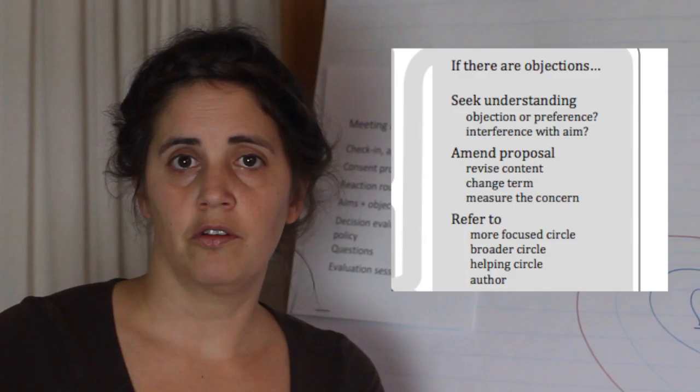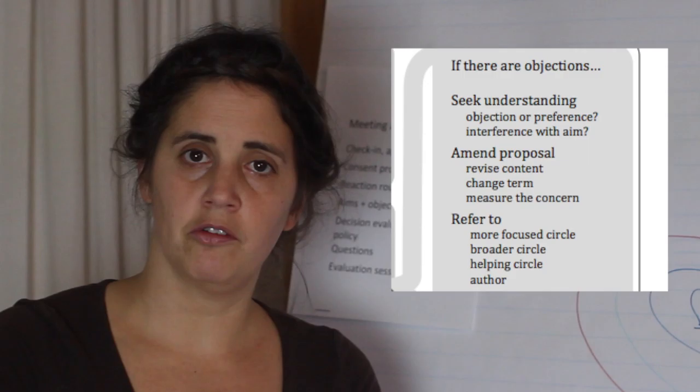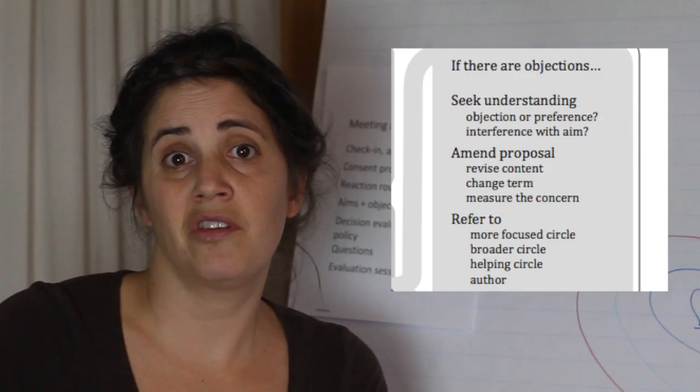The person might just say, you know what? I really felt heard here. I really think you understand what I'm talking about. But I'm willing to let go of it and try it. The other option is to amend the proposal — we might just make a change. We could change it from Thursday to Friday, from 5pm to 4pm, or change any content in our policy. We can also change the term. For instance, if we decided to try something for a year, we might now try it only for six months. Every policy in sociocracy always has a due date, a term end, that will force us to review the policy so we won't get stuck in our ways.